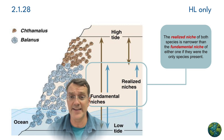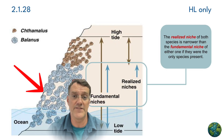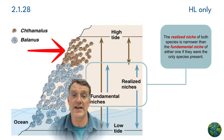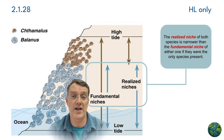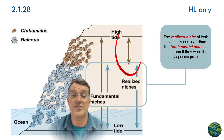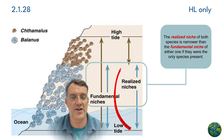However, in reality, they divide the space. The larger Balanus dominates the lower zones where it can physically crowd out the Chthalamus barnacles. But the Chthalamus barnacles survive by occupying the higher zones where it's better at handling the dry conditions, because that's where land is exposed to air above the waterline for longer periods of time. Each species' realized niche is just a portion of where it could potentially live.